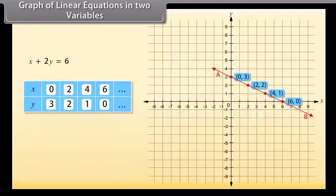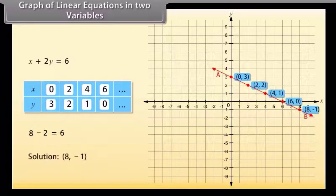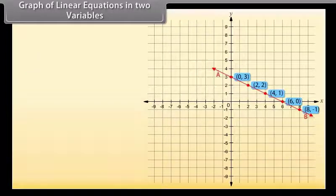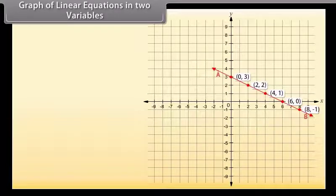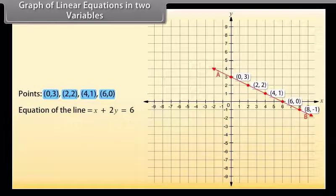Pick another point on this line — let us pick (8, minus 1). Is this a solution of this equation? Yes, because by substituting the value of X as 8 and Y as minus 1, we get the answer 6. So (8, minus 1) is a solution. We have observed that every point whose coordinates satisfy the given equation lies on Line AB. Every point on Line AB gives a solution of the equation. So you can conclude that every point on the line satisfies the equation of the line, and every solution of the equation is a point on the line.